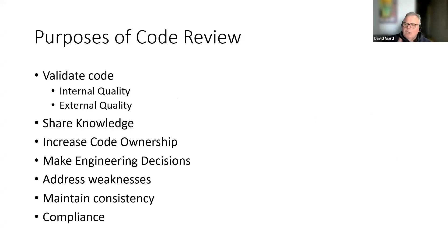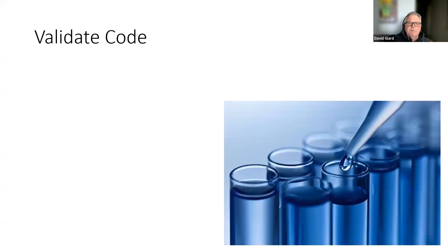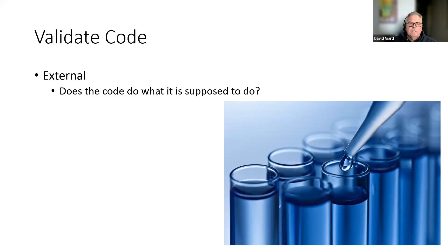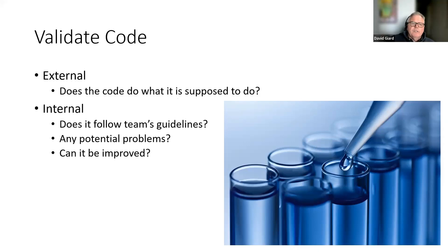This ping-ponging continues until the reviewer says thumbs up and approves the merge. Why do we do code reviews? There are many reasons: to validate the code, share knowledge, increase ownership, make engineering decisions, address weaknesses, and maintain consistency. The first thing people think of is validating that the code does what it's supposed to do — did the developer fix the bug or implement the new feature? That's important and is the first part of the process.